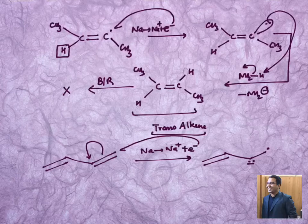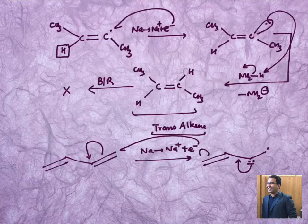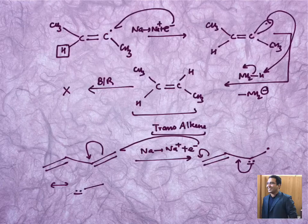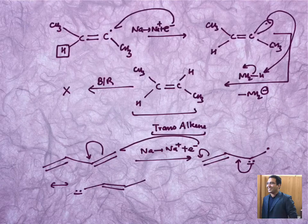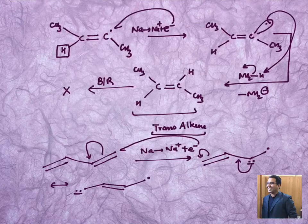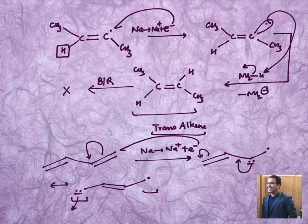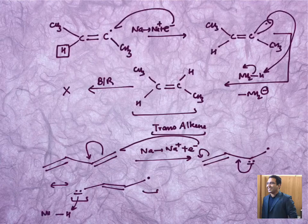This is a negative charge which can stabilize itself with the help of this conjugation and give us formation of negative at this place, double in the middle and radical here. Now you can observe, this is anion, this is radical, they are apart, they are stable. Next step, this will go and grab H from NH3.